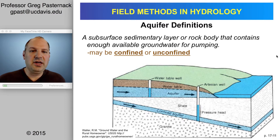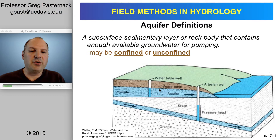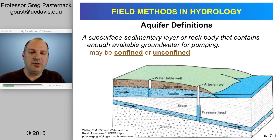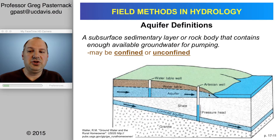An aquifer is basically just a sedimentary layer below ground that has enough water in it that we can pump water out of it. It comes in two varieties: confined aquifers and unconfined aquifers. The unconfined aquifer is where you have atmospheric pressure above it, and therefore the water level in the well will be reflective of the water table position. However, in the confined aquifer, the water level in the well will not be, and that's why when we talk about hydraulic head, it has a component of both pressure and elevation above the datum that may or may not have anything to do with the water table.